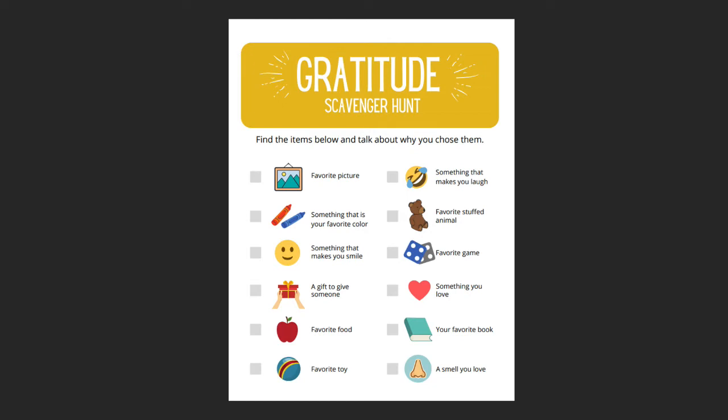Have a discussion about the different items that are on the scavenger hunt sheet, and then encourage them to start looking for different objects. Once you've collected an assortment of items, have a conversation around why each item was chosen. As parents, caregivers, and older siblings, make sure that you've collected at least one or two different items that you are thankful for.